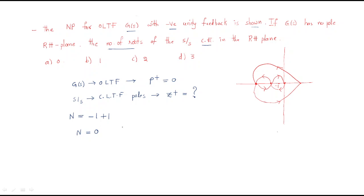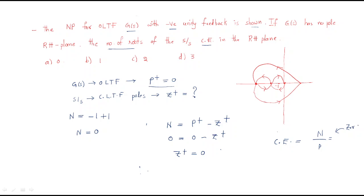Using the Nyquist criterion: N = Z − P, where N is encirclements (0), P is open-loop RHP poles (0), and Z is closed-loop RHP poles. So 0 = Z − 0, giving Z = 0. The number of closed-loop poles in the RHP is zero. Since the characteristic equation's roots correspond to the system poles, the number of roots in the RHP is zero.